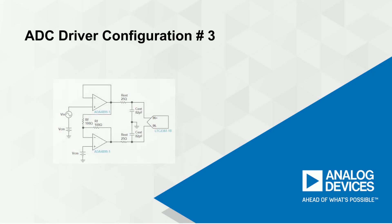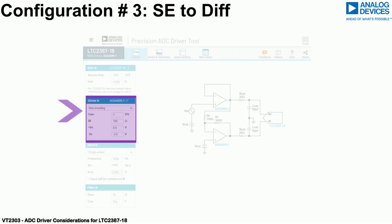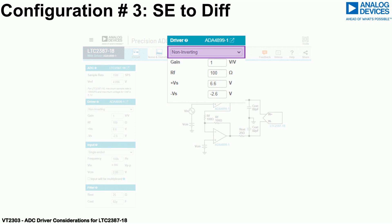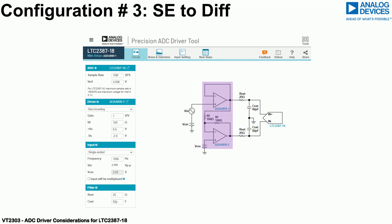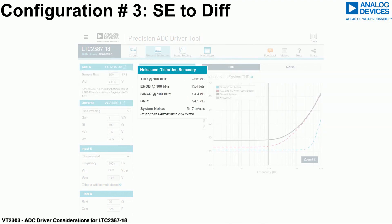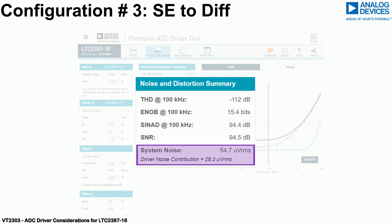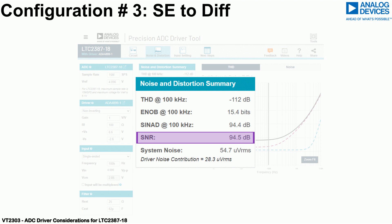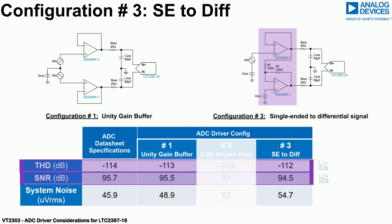The third recommendation is for single-ended to differential signal conversion taking place before the ADC driver input circuit stage. In the ADC driver tool, select the non-inverting configuration for the input driver circuit with the gain set to 1 and the single-ended input. The circuit uses two ADA 4899-1 devices to perform the conversion. The distortion for this configuration is minus 112 dB and the system noise is 54.7 microvolts RMS, with the associated signal-to-noise ratio projected to be 94.5 dB. The distortion and signal-to-noise ratio are both reduced by approximately 1 dB.